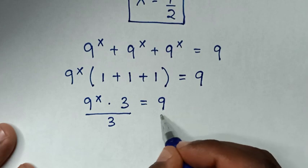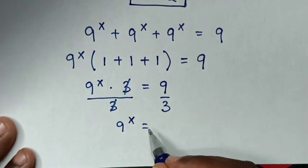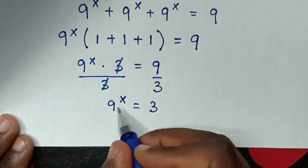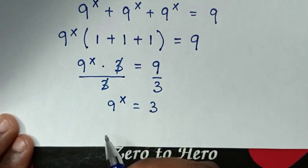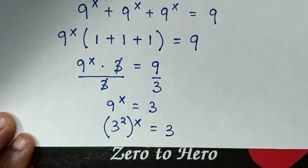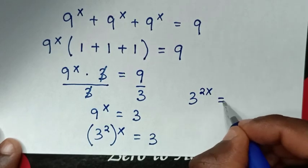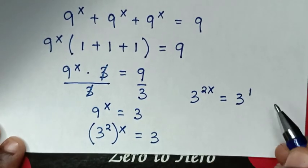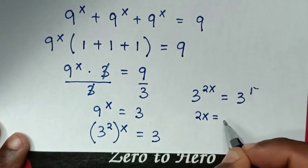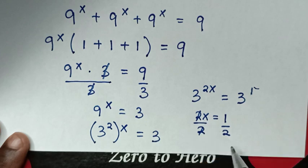We divide both sides by 3, so 9 power x equals 9 divided by 3, which is 3. In the next step, for 9 power x, we write 9 as 3 squared, giving (3²)^x equals 3. Applying the power rule, 3 power 2x equals 3 power 1. Since the bases are the same, we compare powers: 2x equals 1. Dividing both sides by 2, x equals one half.